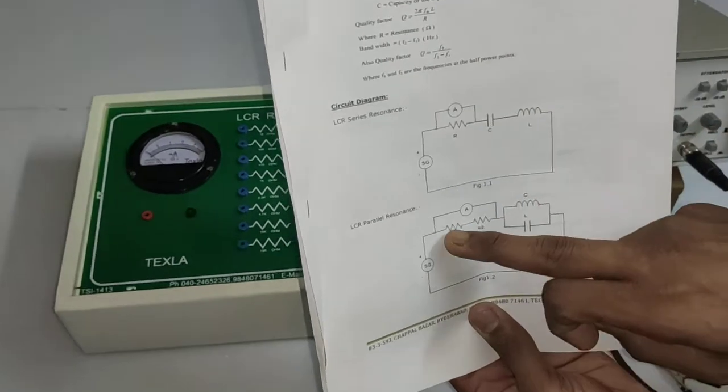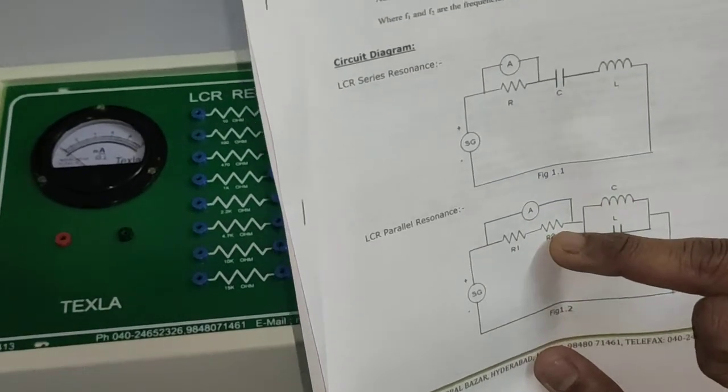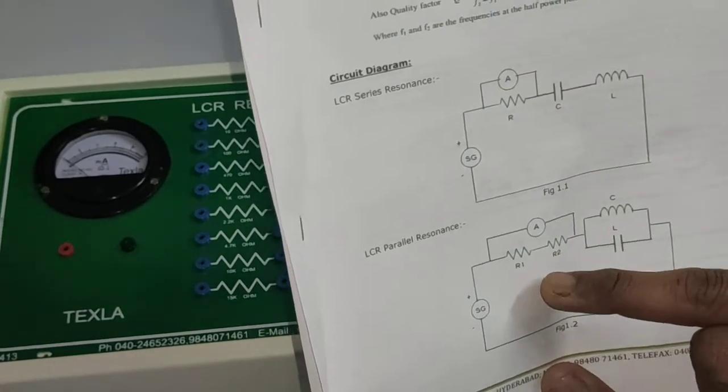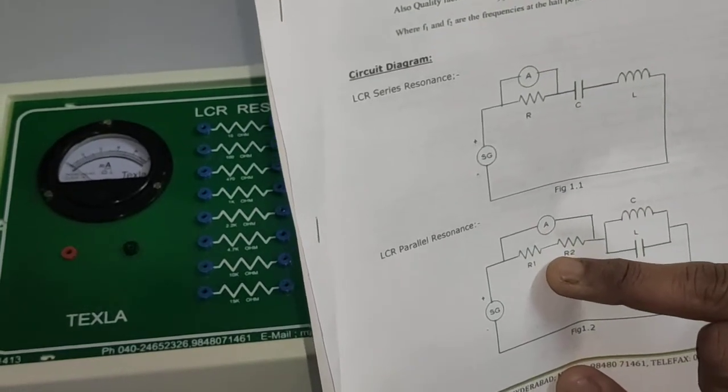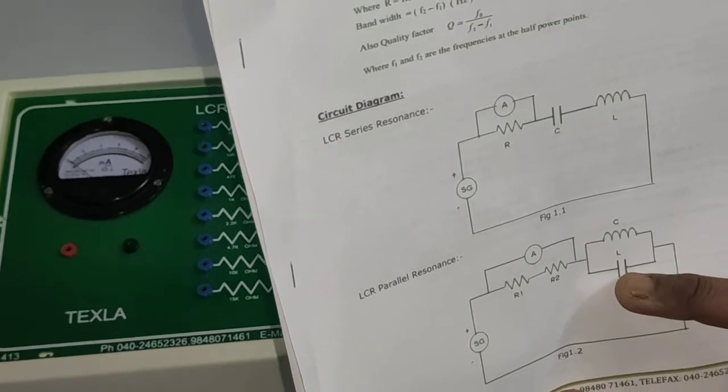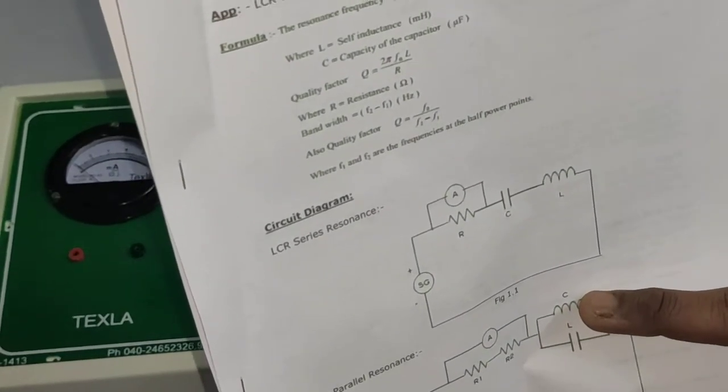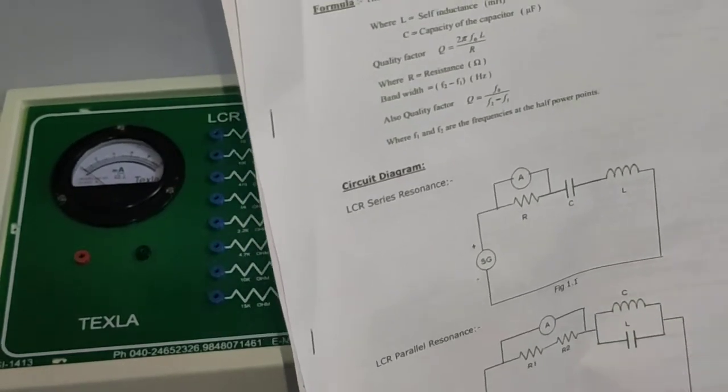So I am taking same 1 kilo ohm resistance here, we are not going with R1 R2, we are going with only R1 as 1 kilo ohm. Same L we have taken last in the earlier video, it is 1 milli henry, capacitance 0.1 microfarad. So same combination I am taking out.